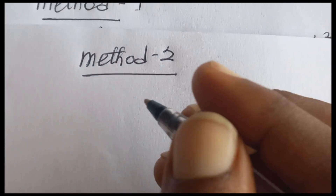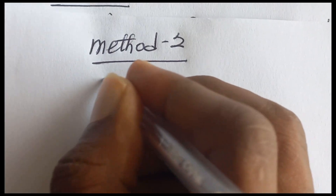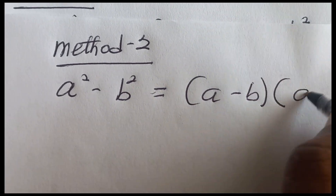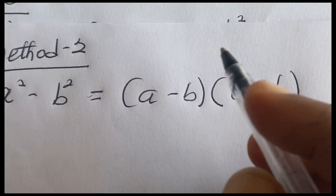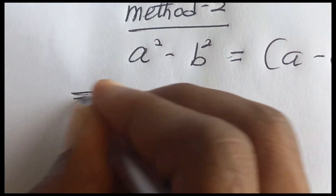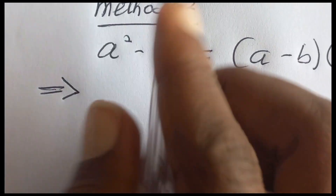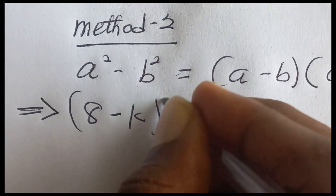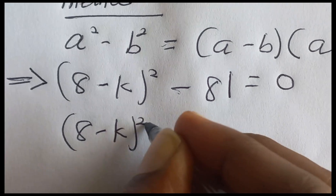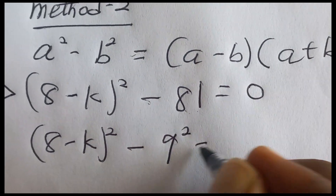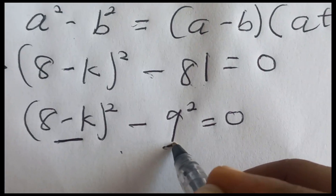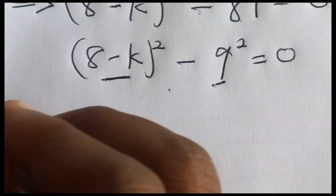Now let's solve using Method 2. In Method 2 we are going to use the formula a squared minus b squared equals (a minus b)(a plus b). Our equation becomes (8 minus k) squared minus 81 equals 0. We can write 81 as 9 squared, so comparing: our a is (8 minus k) and b is 9.